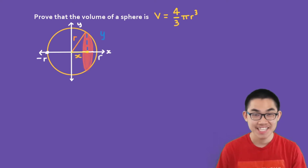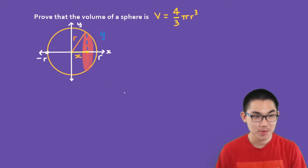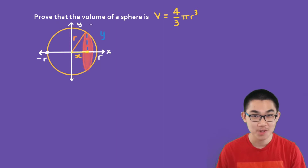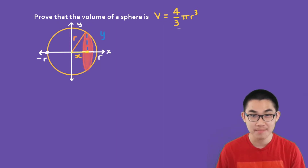Hi friends! In this video, I'm going to show you how to prove that the volume of a sphere is v equals 4 divided by 3 times pi times the radius cubed.